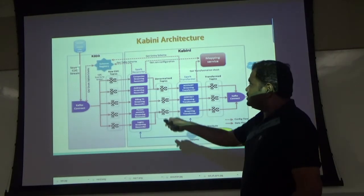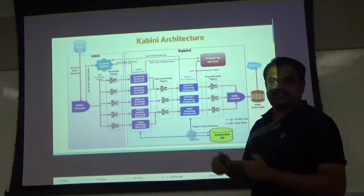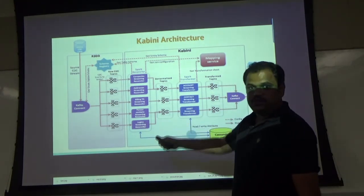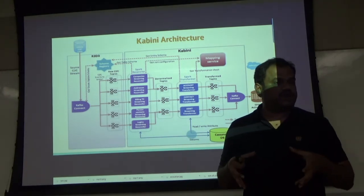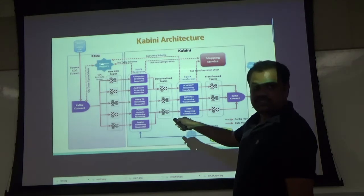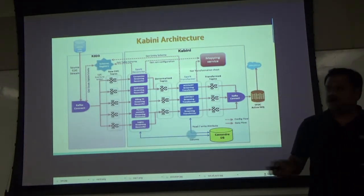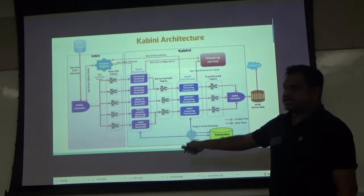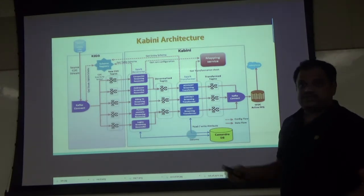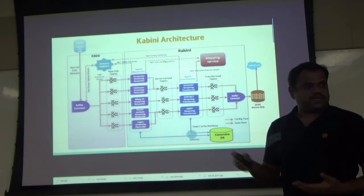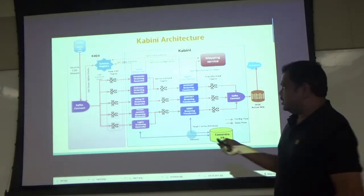Our connector pulls data from the source database every second. For each record, it creates an Avro schema registered with the Confluent schema registry, creates an Avro record from the JDBC result set, and publishes it to a raw Kafka topic — raw because no processing has happened yet. One thing to note: we considered both single-partition and multi-partition Kafka topics, each with pros and cons. We also aim to support up to 3,000–4,000 TPS.